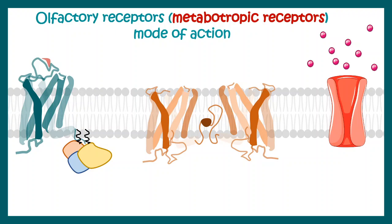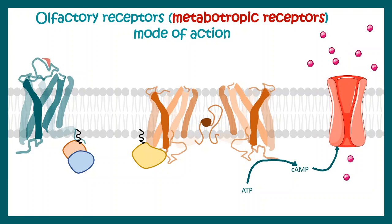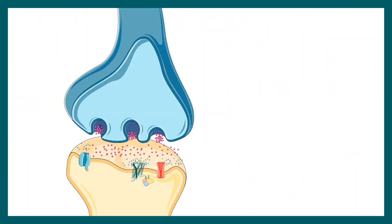The alpha subunit of the G protein gets dissociated and it activates adenylate cyclase. Adenylate cyclase in turn generates cyclic AMP from ATP, and this cyclic AMP leads to activation of cyclic nucleotide-gated channels, which leads to influx of cations inside these cells. This actually depolarizes the cell and sends the signal to the brain.